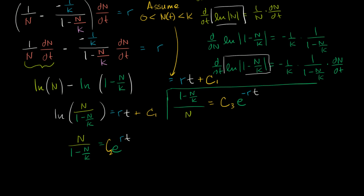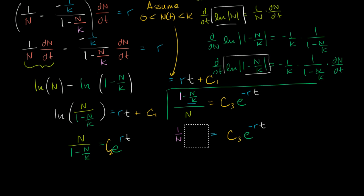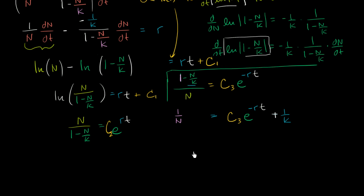Now divide the numerator and denominator by n: the term (1/n) minus (1/k) equals c3 times e to the negative rt, so 1/n minus 1/k = c3·e^(−rt). Adding 1/k to both sides gives 1/n = c3·e^(−rt) + 1/k, and taking the reciprocal of both sides gives us n(t).